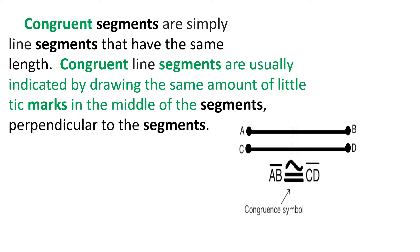Congruent segments are simply line segments that have the same length. Congruent line segments are usually indicated by drawing the same number of tick marks perpendicular to the segments. Notice this has two tick marks perpendicular to AB and two tick marks perpendicular to CD. Because they both have two tick marks, it indicates they are congruent, so segment AB is congruent to segment CD. Notice this is the congruence symbol — it has an equal sign in it because we are talking about segments that are the same length.